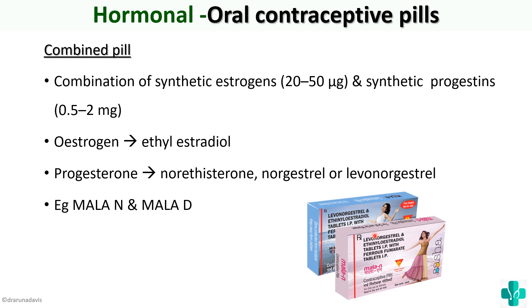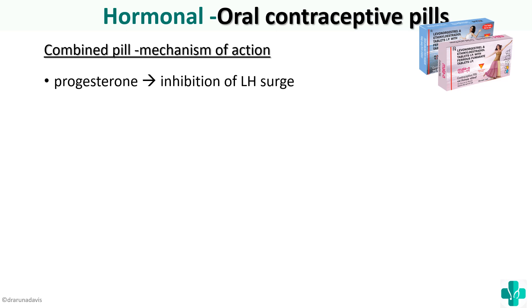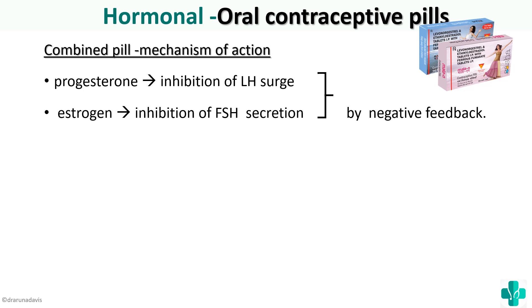Examples of the combined pill are Mala N and Mala D, both promoted by the government of India for contraception. In physiology, we are more concerned about the mechanism of action — how supplementing estrogen and progesterone to a woman produces contraception. Progesterone will inhibit the LH surge and estrogen will inhibit FSH secretion, both by negative feedback mechanism.